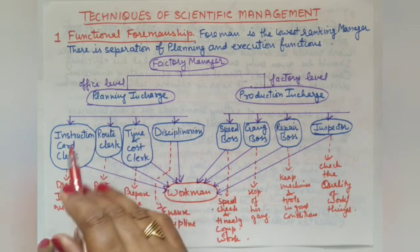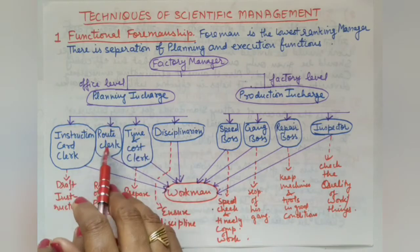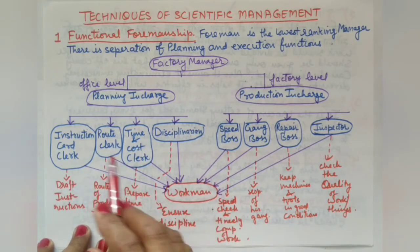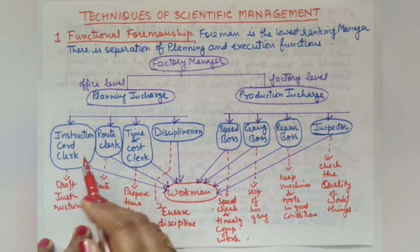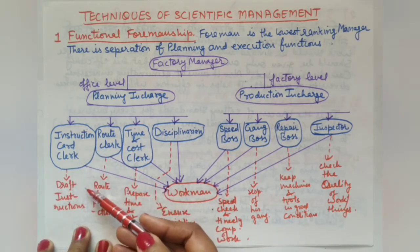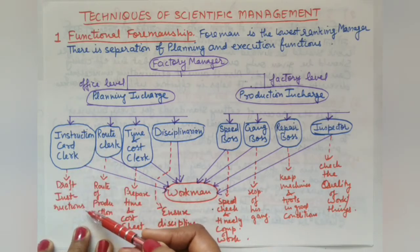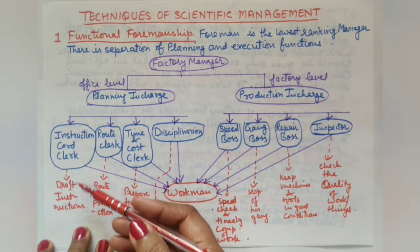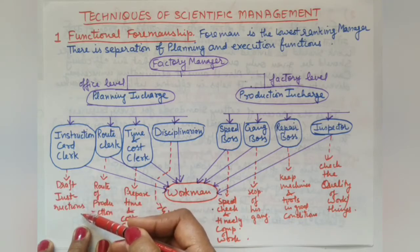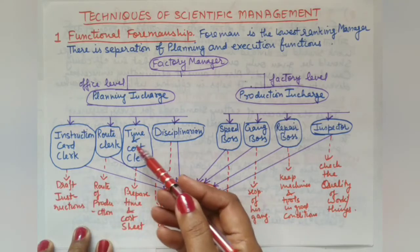At the office level under the planning in-charge, the first person is the Instruction Card Clerk, who drafts instructions for the workers and gives them to the workers.